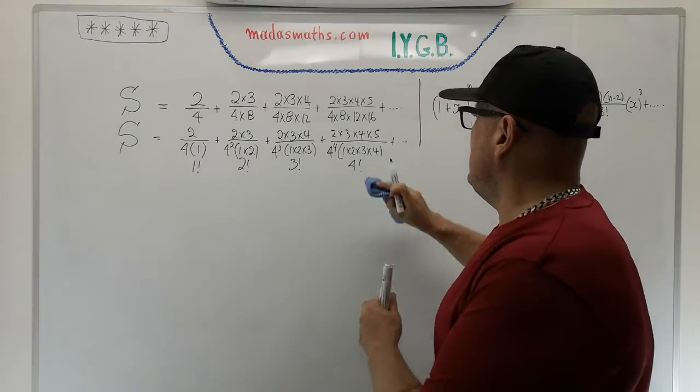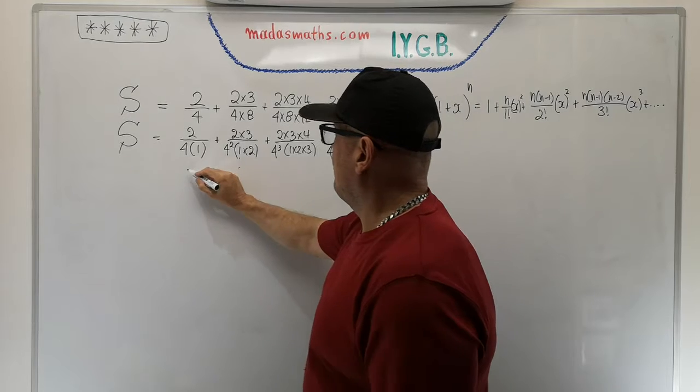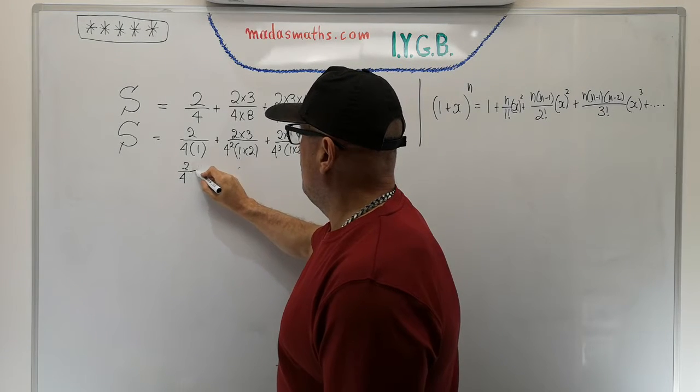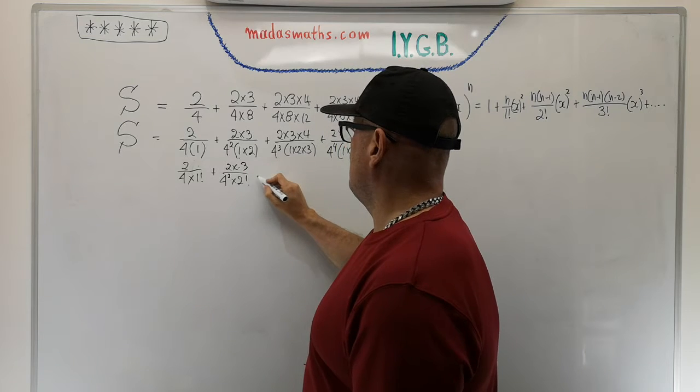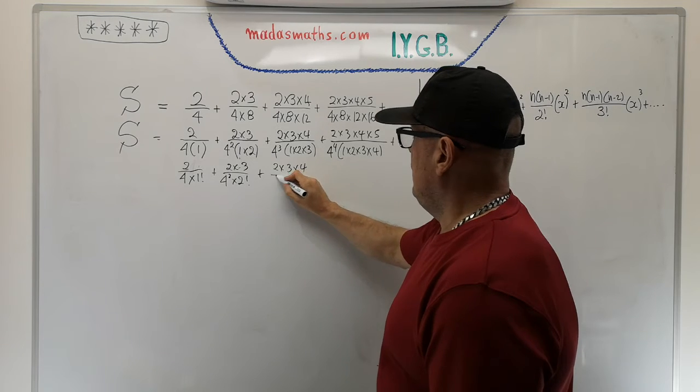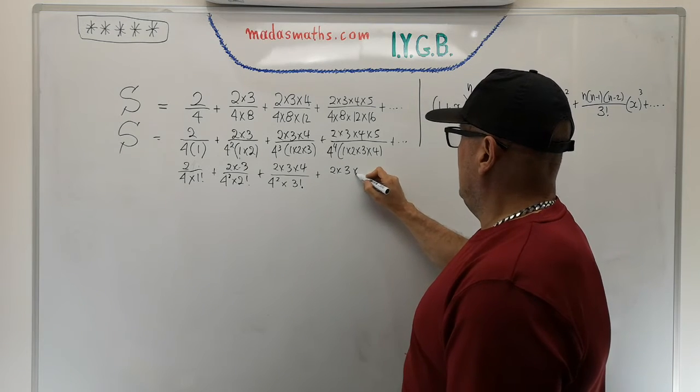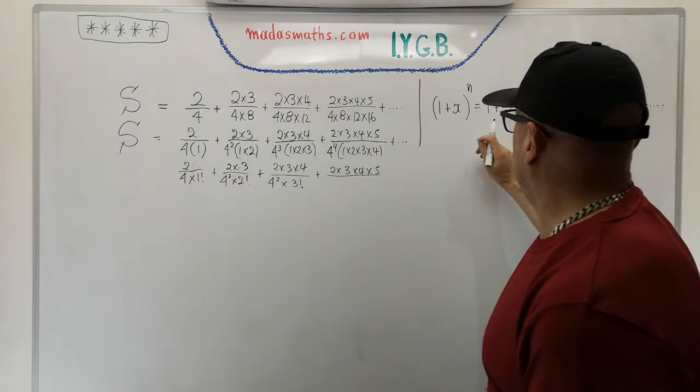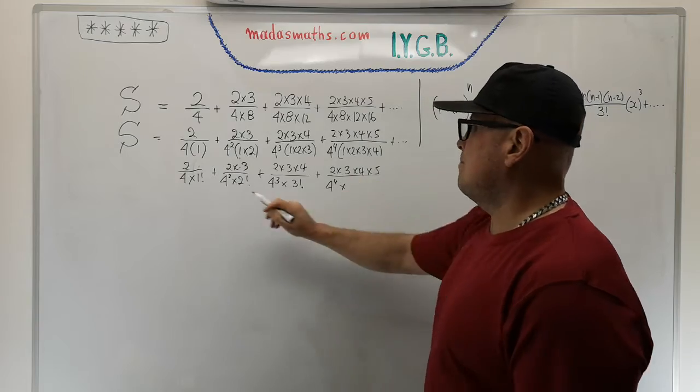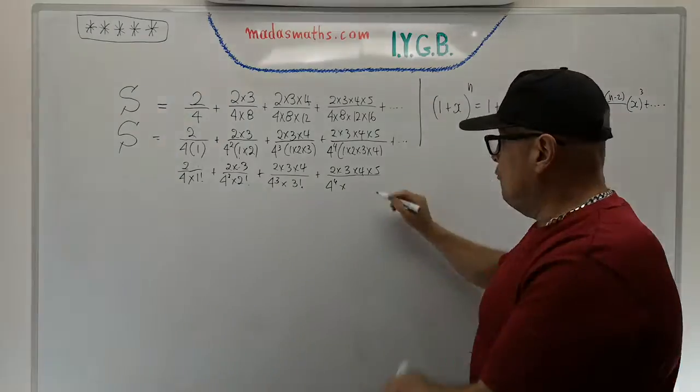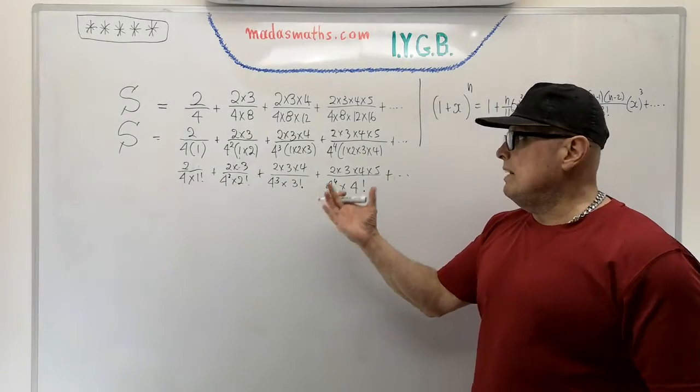So far all I'm doing is merely rewriting these terms in factorials and trying to see what's my next move. S equals 2 over 4 times 1 factorial plus 2 times 3 over 4 squared times 2 factorial and so on. At the bottom of these fractions I should only really have factorials, and I've got these powers of 4: 4 to the 1, 4 squared, 4 cubed, 4 to the power of 4 and so on. So somehow I need to lose those. One way you can lose those, and sometimes it's worth experimenting.